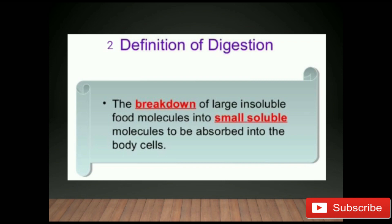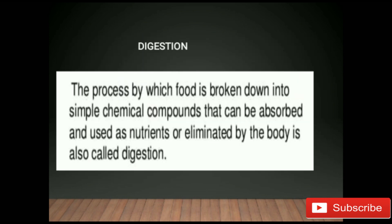The second phase of food processing is digestion — the breakdown of large insoluble food molecules into small soluble molecules to be absorbed into the body cells. Food remains in the stomach for a few minutes to a few hours. During this period, thousands of glands in the stomach wall secrete digestive juices containing acid and enzymes that break down protein. Most of the digestion takes place in the small intestine, where digestion is completed.